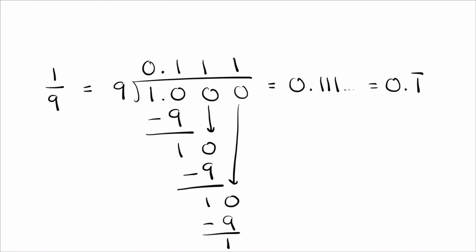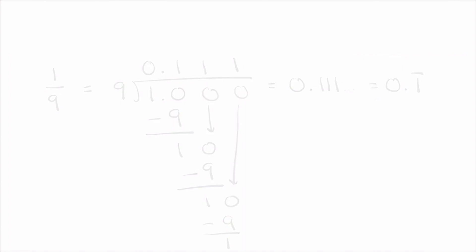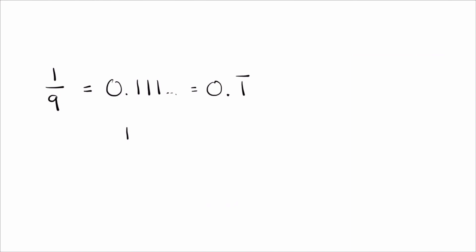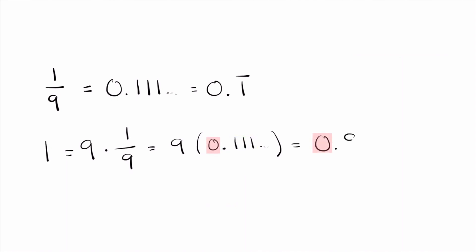Maybe you can see already how we're going to use that to prove the exact same thing. We do the same trick: take 1/9 and multiply it by 9. Of course, 1/9 times 9 is just 1. On the right, I rewrite 1/9 as 0.111 going on forever. This one's even simpler to see — multiply 9 times each of those digits and you get a 9 each time, so that becomes 0.999 repeating. Again, a nice way to show that 1 is the same as 0.9 repeating.